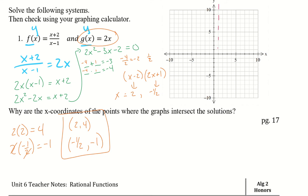We have a vertical asymptote at x equals negative 1 and a horizontal asymptote at y equals positive 1. There's the f(x) function, and g(x) is 2x.